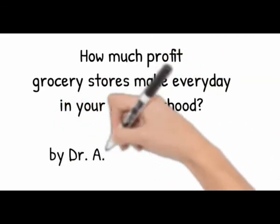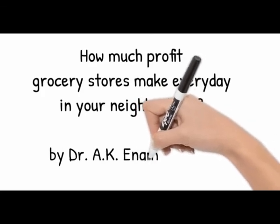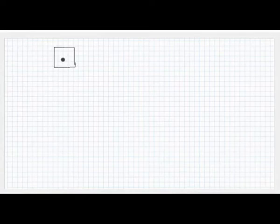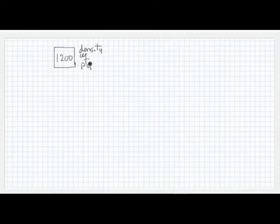Professor A.K. illustrates how much profit grocery stores make per day in your neighborhood per square kilometer in Bangladesh. Around 1,200 people live per square kilometer, which is known as density of population.